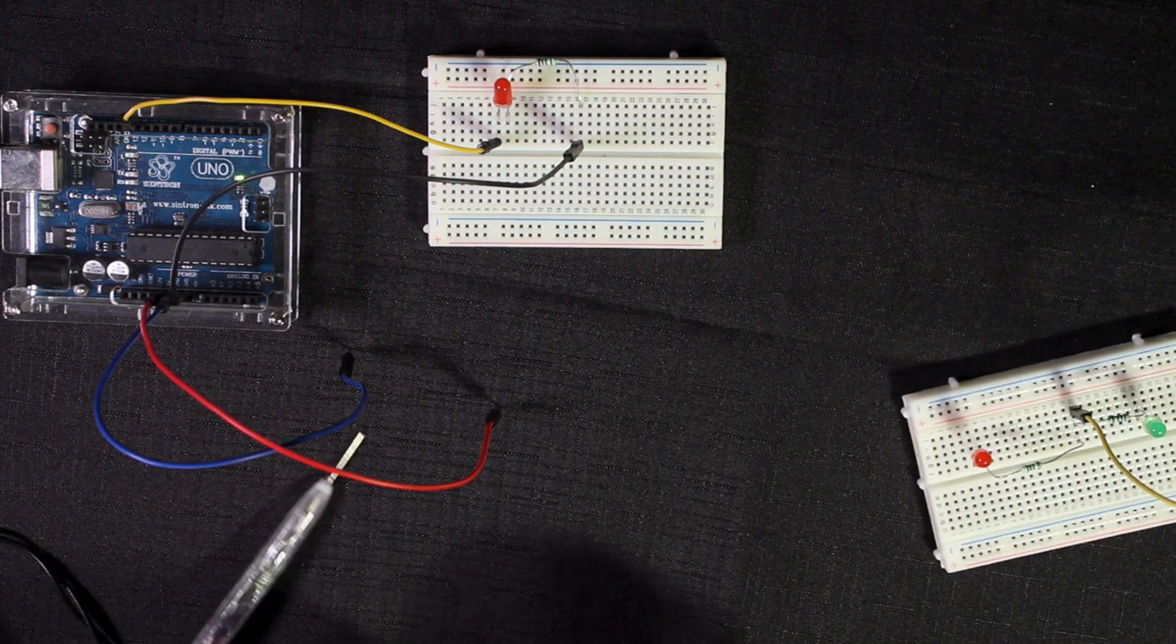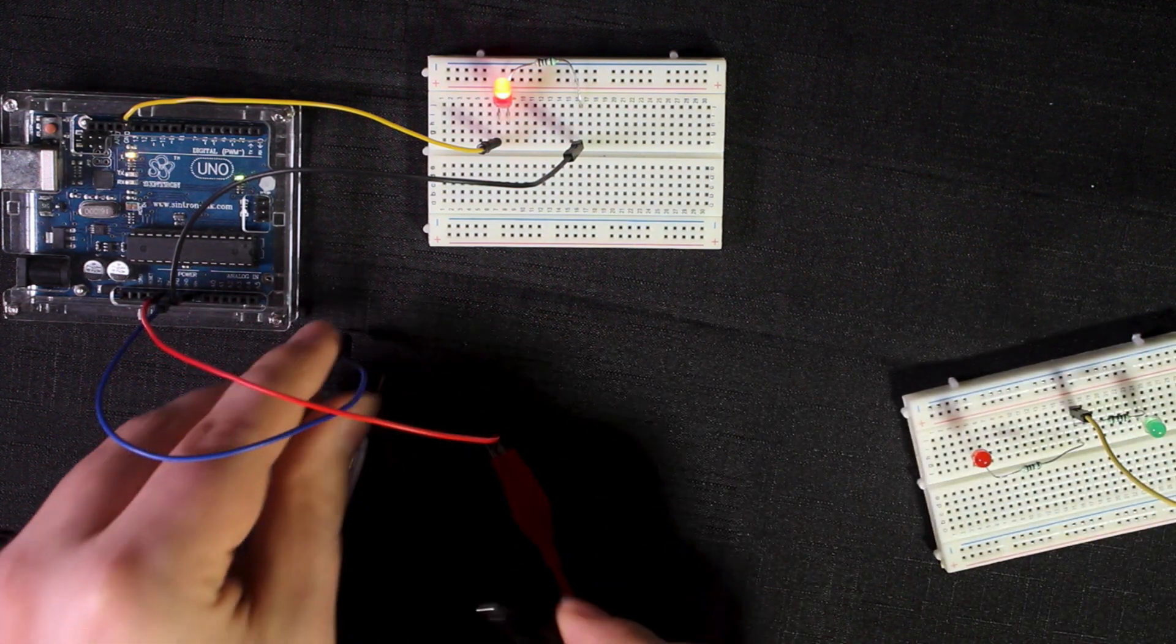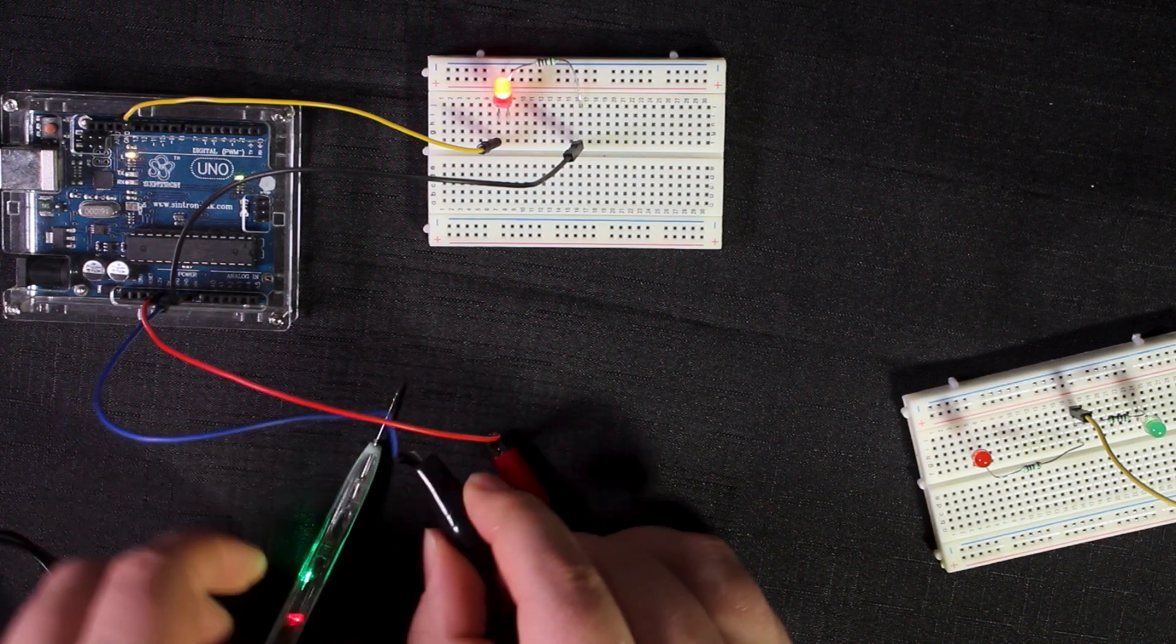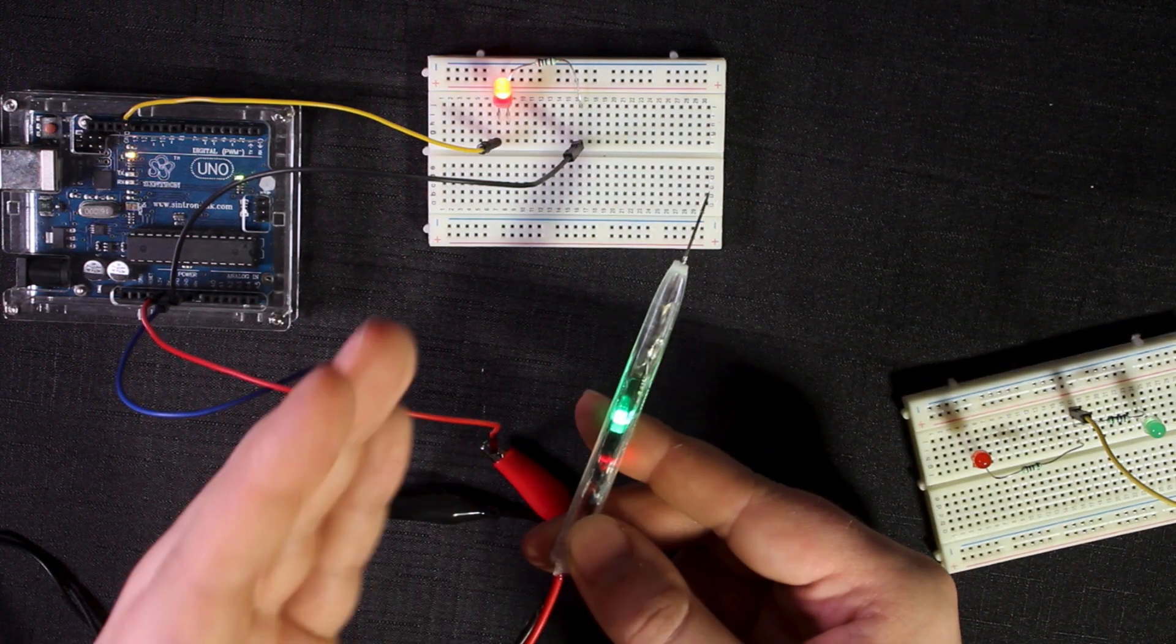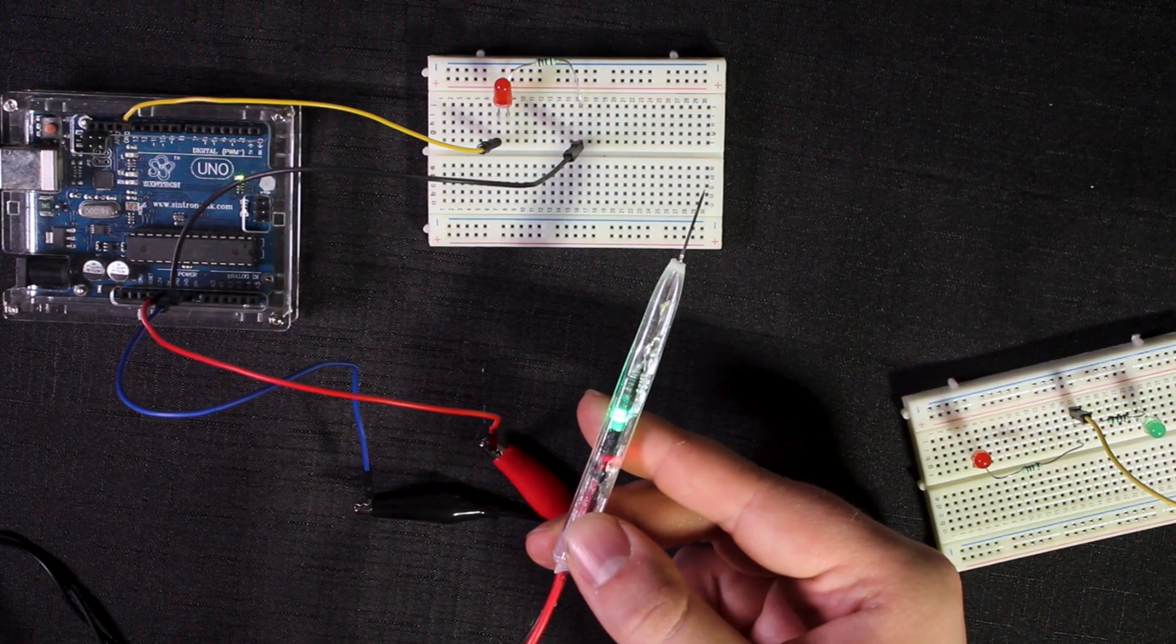If I connect the positive to the positive from here, using the Arduino as the power source, you see that both LEDs light up, green and red, like the breadboard did.